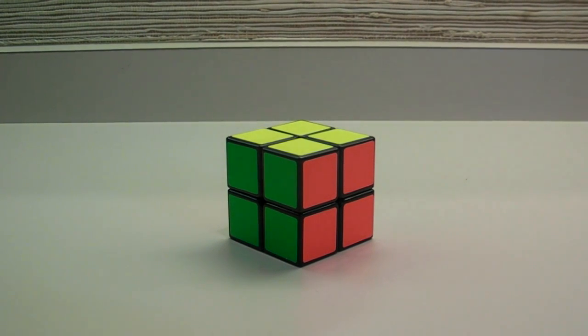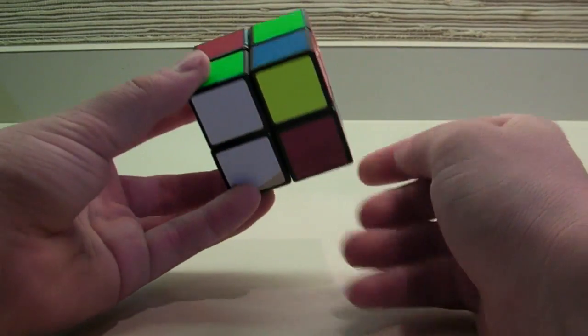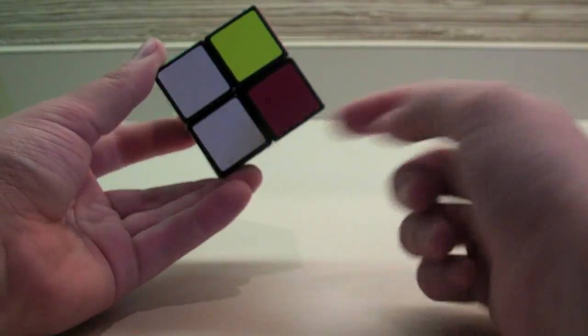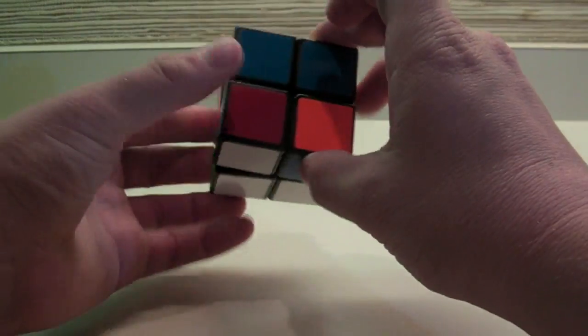The Ortega method has three steps which will proceed as follows. First, you choose a face that you want to start on and solve just those four stickers. So I'm going to choose white, since already two pieces are next to each other, and I'm going to solve the pieces.